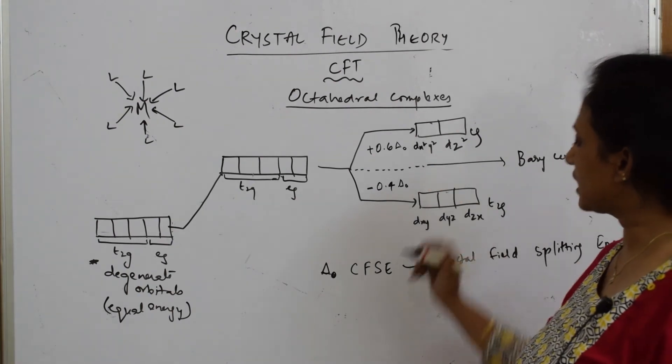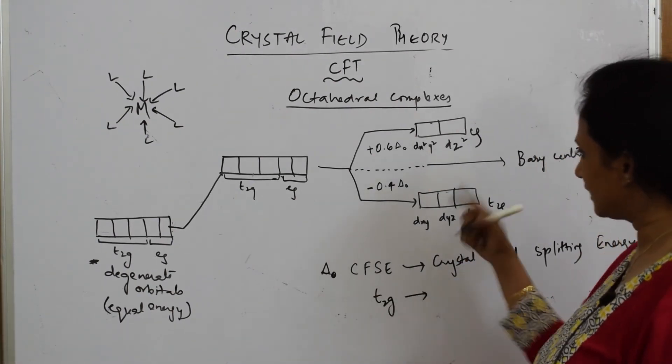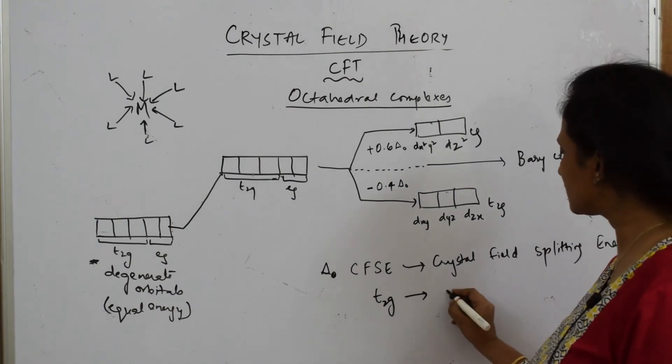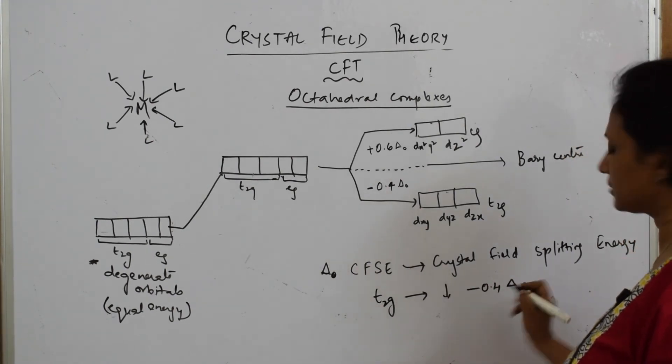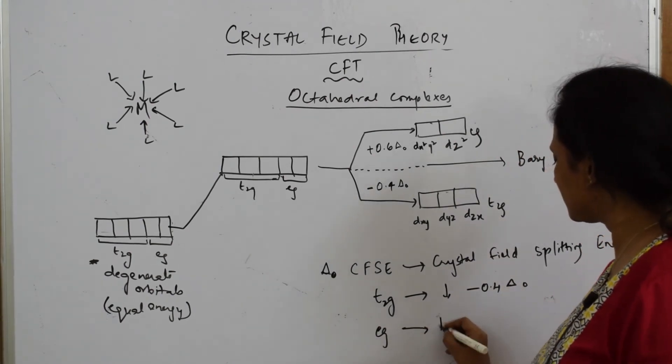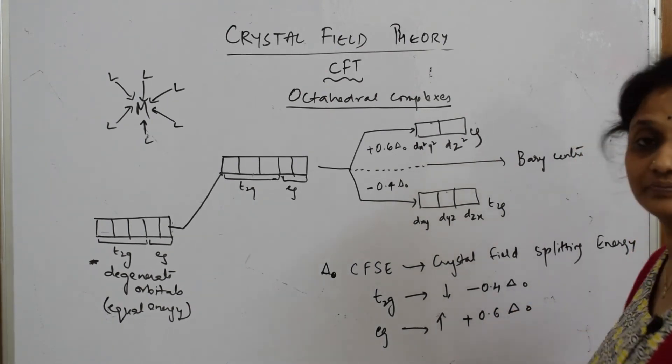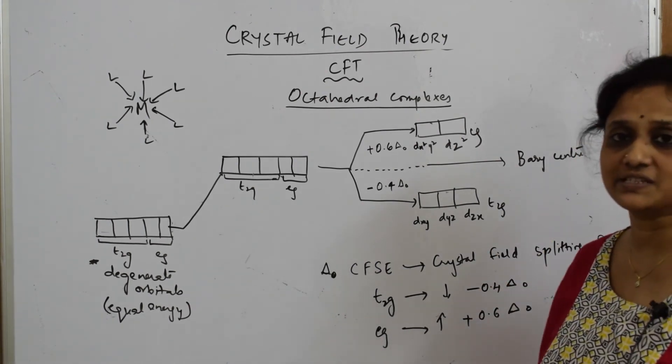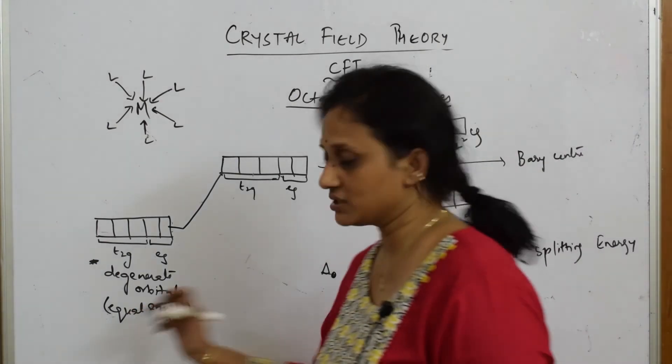Basically here, what happened? Your t2g set has decreased by -0.4 delta_o and the eg set has increased in energy by +0.6 delta_o. This is your CFSC difference. Most important thing: what should you write in the exam? You have to show this very important diagram.